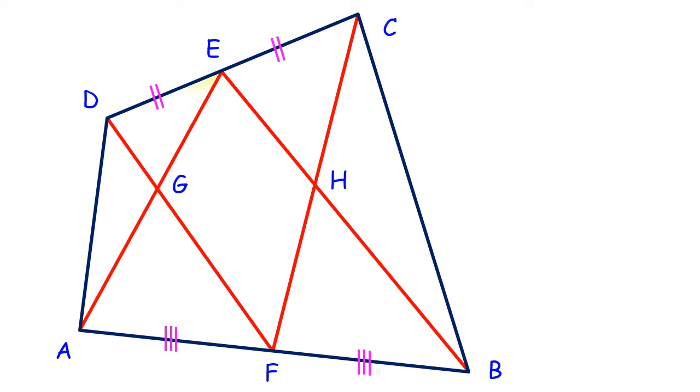The triangle DEG area is given as 3 cm², AFG area is given as 6 cm², and triangle BHF area is given as 8 cm². Using this data, we have to find the area of ECH. If its value is X, we have to find X.